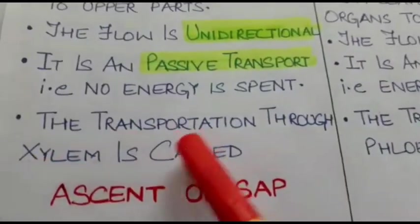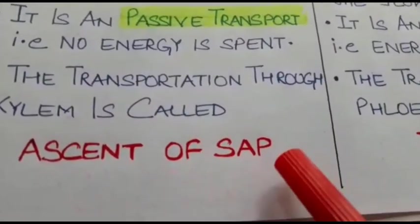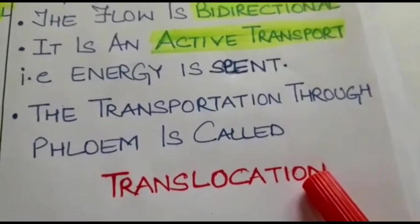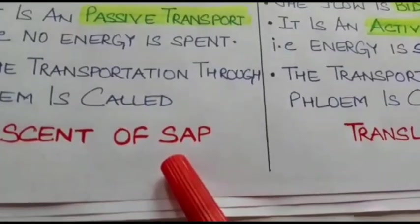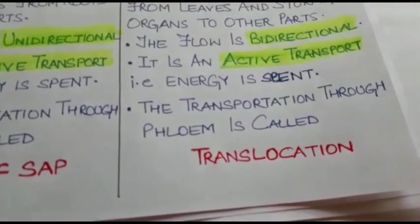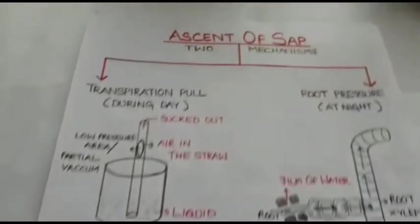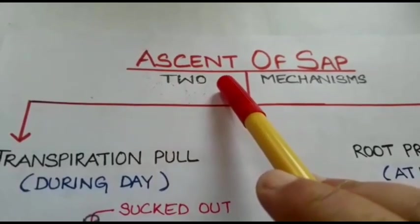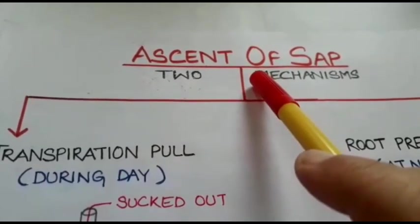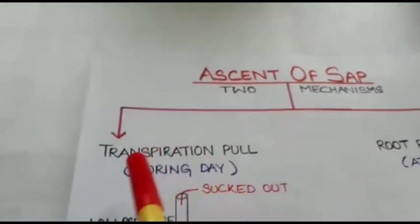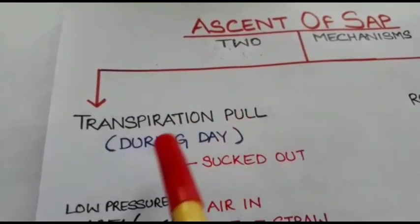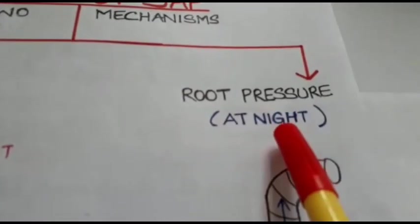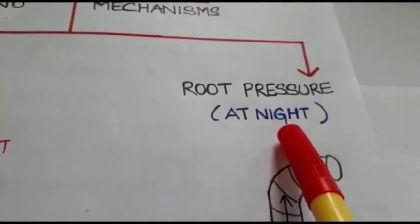The transportation through xylem is called ascent of sap, whereas the transportation through phloem is called translocation. Now we shall be discussing the mechanisms of ascent of sap and translocation in detail one by one. Ascent of sap is the transportation of water and minerals through xylem tissue, and it has two mechanisms: number one, transpiration pull, which is the main mechanism operating during the daytime, and the second mechanism is root pressure, which is the prominent mechanism at night.